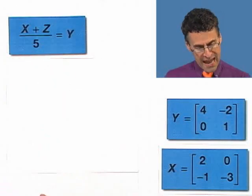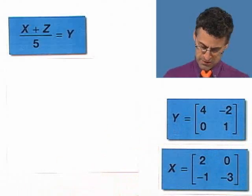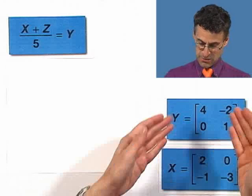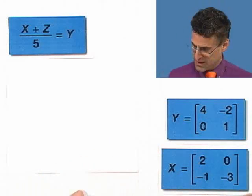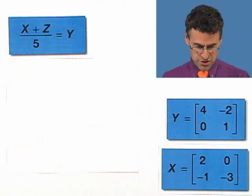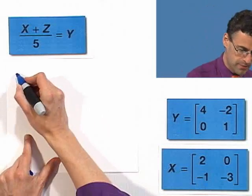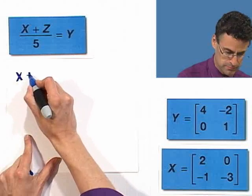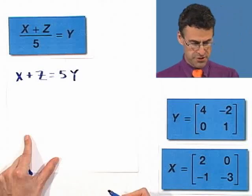And then at the very end, we'll insert this particular value for y and this particular value for x. And those values, of course, really are matrices. But no worries. So check it out. How would you solve this equation for z? First thing I would do is multiply both sides by 5. Okay, terrific.